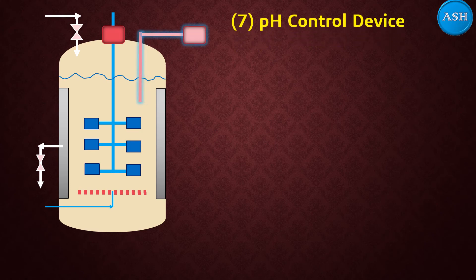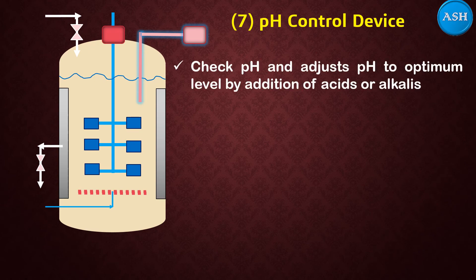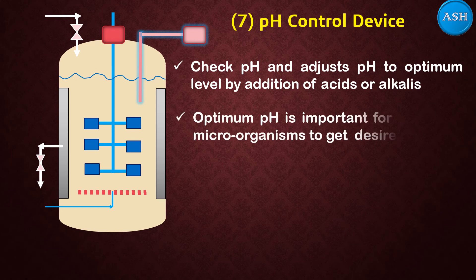The seventh major part is the pH control device. It checks the pH and also adjusts the pH to the optimum level by addition of acids or alkalis. The optimum pH is important for the growth of microorganisms and production of the desired product. The optimum pH is around neutral — that is pH 7 — for most microorganisms to grow.